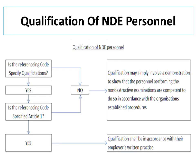Qualification of NDE personnel: The qualification of NDE personnel according to Article 1 can be understood from this diagram. If the referencing code is not specifying qualifications, then qualification may simply involve a demonstration to show that the personnel performing the non-destructive examinations are competent to do so in accordance with the organization's established procedures. If the referencing code specifies to refer to Article 1, then qualification shall be in accordance with the employer's written practice. Do not be confused with both these.